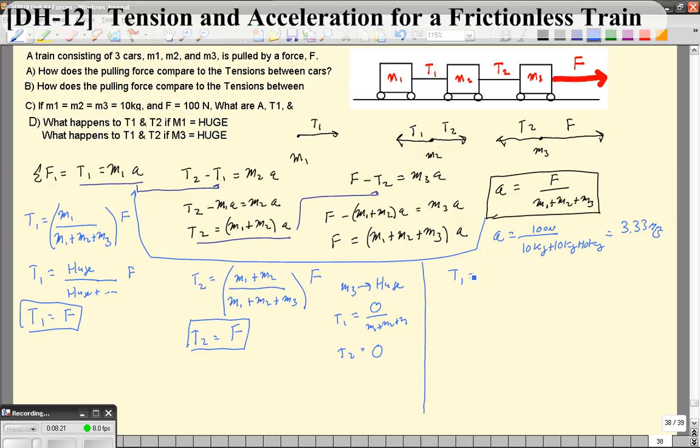Tension 1 is going to be equal to M1, which is 10 kg over 10 kg plus 10 kg plus 10 kg times F, which is going to give you one-third of the pulling force, or 33.3 newtons.